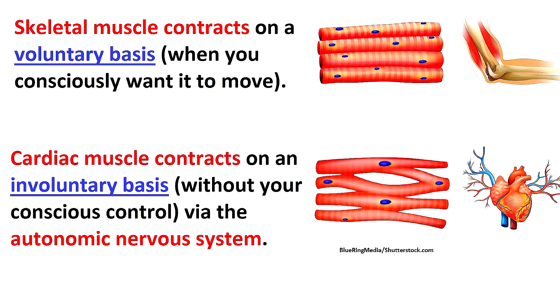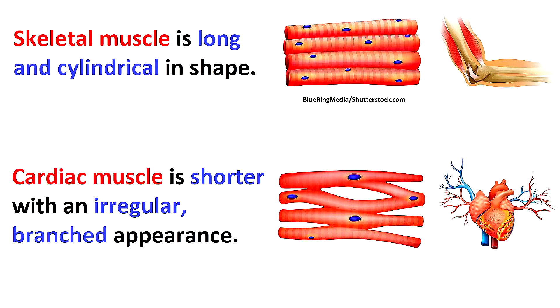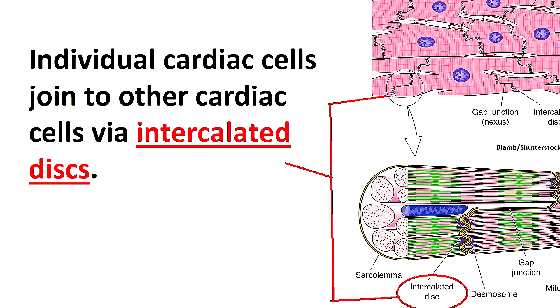There are also differences between them. Whereas skeletal muscle contracts on a voluntary basis, cardiac muscle contracts on an involuntary basis without your conscious control via the autonomic nervous system — which is a good thing, because if we had to consciously remember to make our hearts pump, most of the population would probably be dead. There's also a difference in shape: skeletal muscle tissue develops into long cylindrical fibers, but cardiac muscle tissue is formed into single cells that have an irregular branched appearance. These individual cells join to other cardiac cells via intercalated discs.